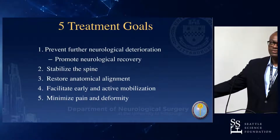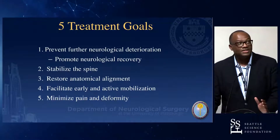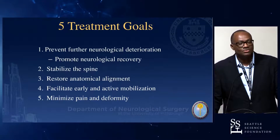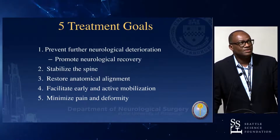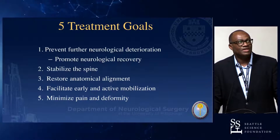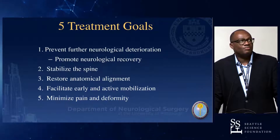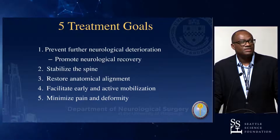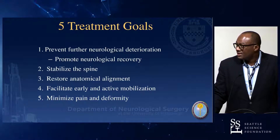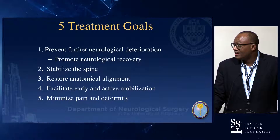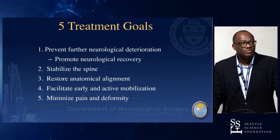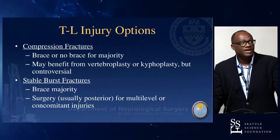Five treatment goals — very simple. What are we trying to do when somebody has a fracture? We're literally trying to prevent neurological deterioration, we want to promote recovery, stabilize the spine. We want to restore an anatomical alignment and facilitate early and active mobilization. And of course we want to minimize their pain and deformity.